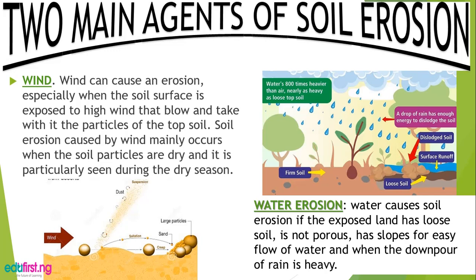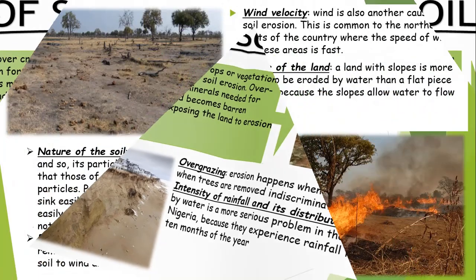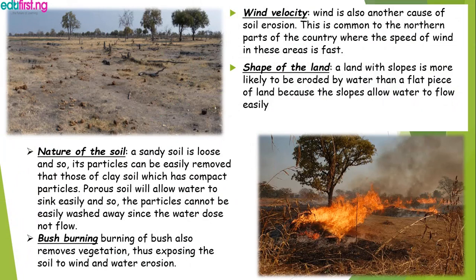Causes of soil erosion include overgrazing, over-tilling of the land by farmers, over-cultivation — such as when farmers plant two or three times a year. Also, intensity of rainfall: when the rain is too much, it causes soil erosion. Other causes include the nature of the soil, bush burning, and wind velocity.